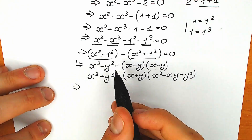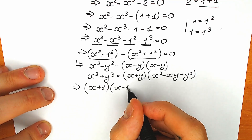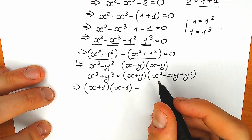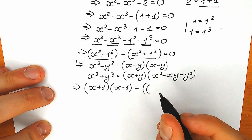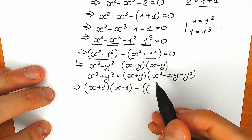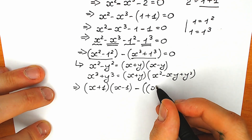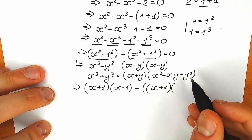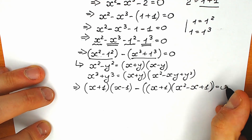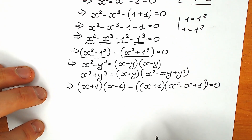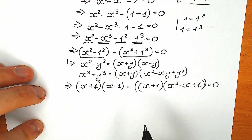Applying the difference of squares to the first parenthesis gives us (x plus 1)(x minus 1). Applying the sum of two cubes to the second parenthesis gives us (x plus 1)(x squared minus x plus 1). So our full expression becomes: (x plus 1)(x minus 1) minus (x plus 1)(x squared minus x plus 1) equals 0.